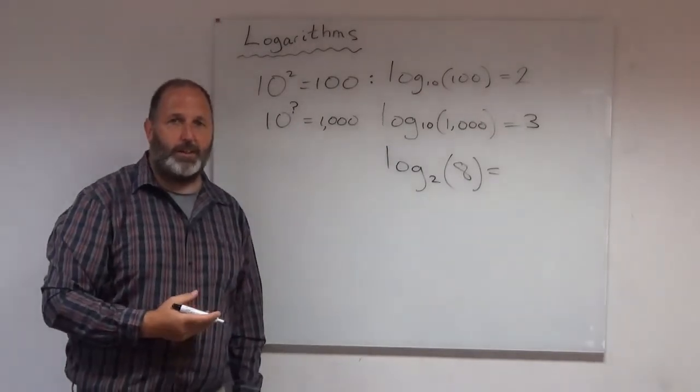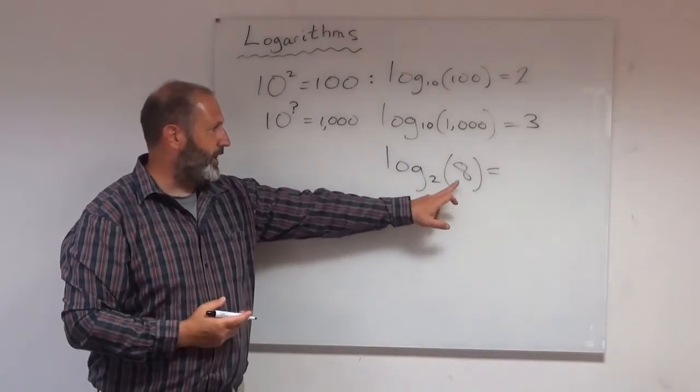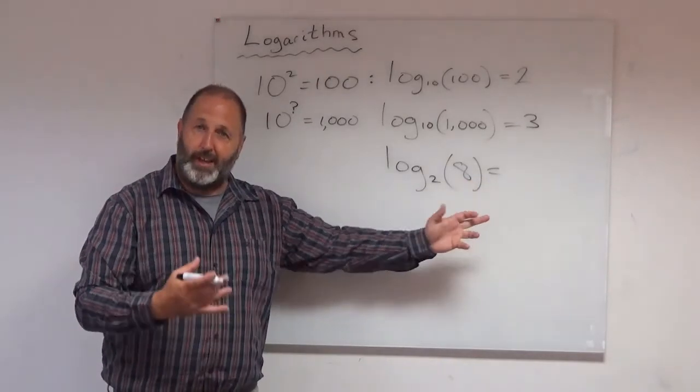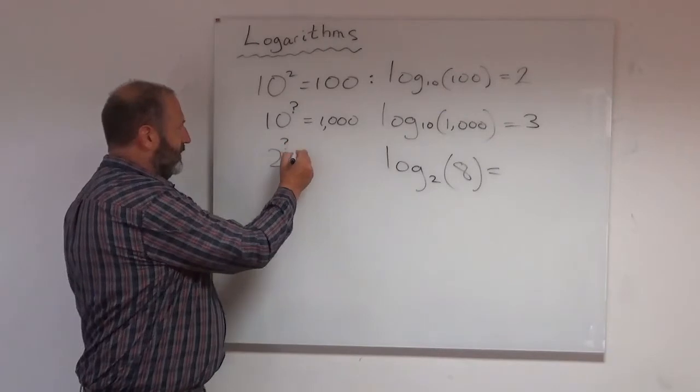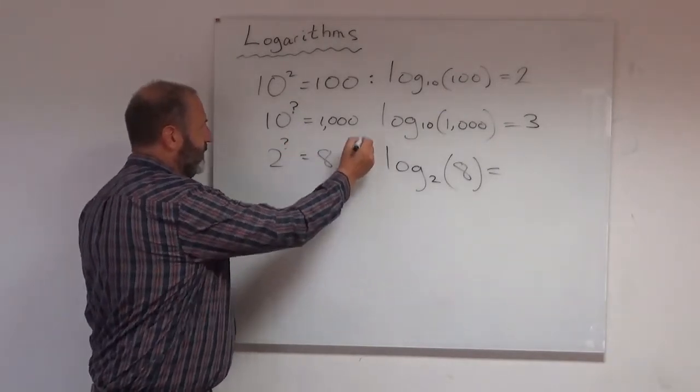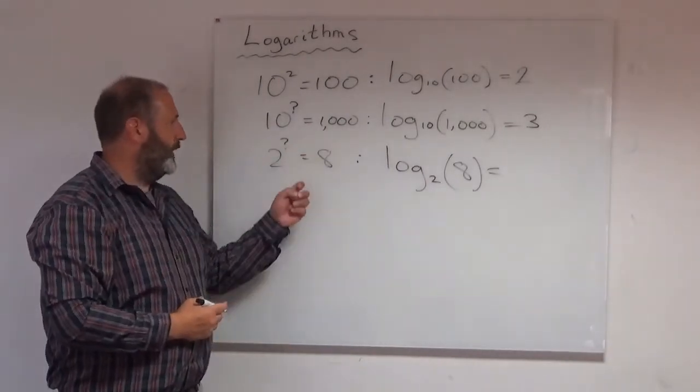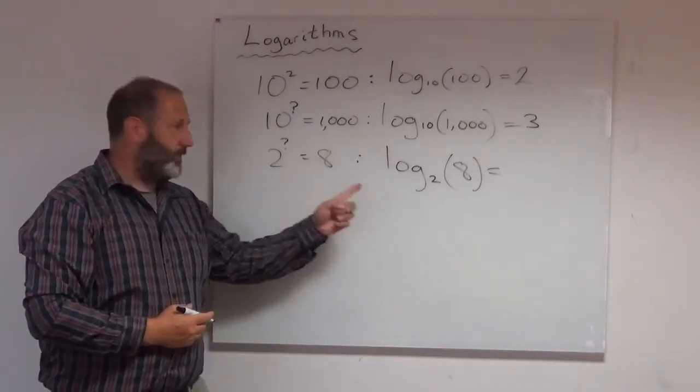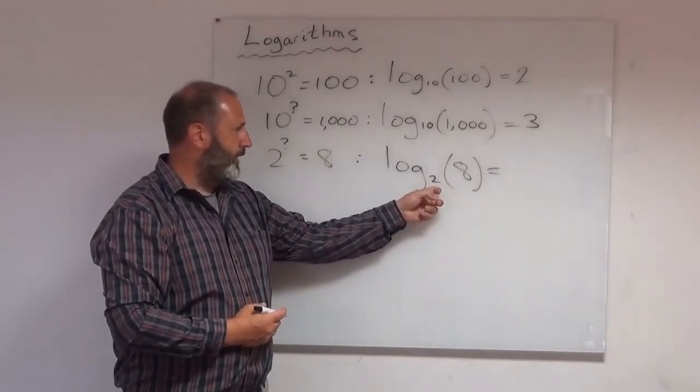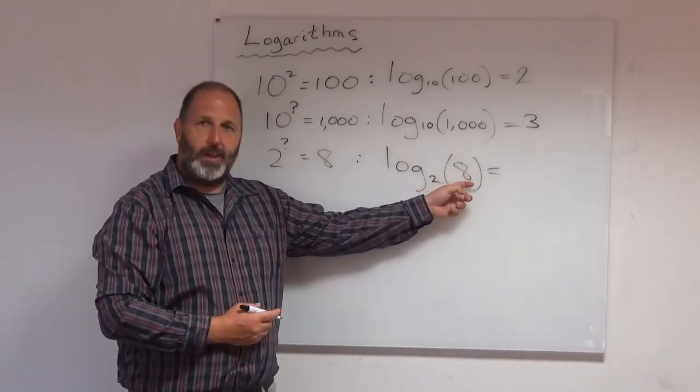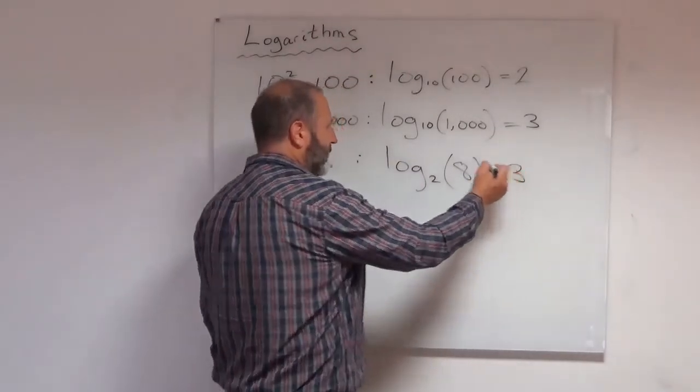What about something like this? Log to the base 2. It doesn't have to be 10 every time. Log to the base 2 of 8. What does that mean? And if need be, cheat. Change the question. Think of it like this. And then it's not a difficult question. Wonder what power I raise 2 by to give me 8? And that's the question you can ask here, without writing this down. Of course, 2 times 2 times 2 is 8. So it's 3.